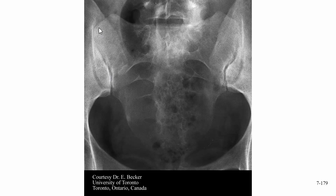This is what the sacrum looks like on x-ray — it almost looks like a shield. It's a little distorted because we have to tilt the x-ray tube downward at an angle to get through the pelvis, which makes it look longer and larger than it really is. And here's our sacroiliac joint, right in here.